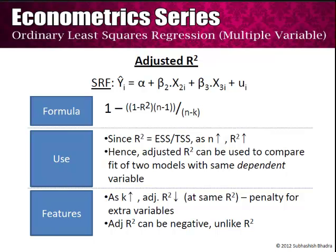Finally, we talk about the adjusted R-square. The problem with R-square is that the more variables you add — x₄, x₅, x₆ — the R-square will never go down. At worst, the coefficient of the new variable can be equal to 0, in which case R-square will be the same as before, but in no case can R-square actually deteriorate. Hence there is an incentive for any econometric student to keep adding explanatory variables.